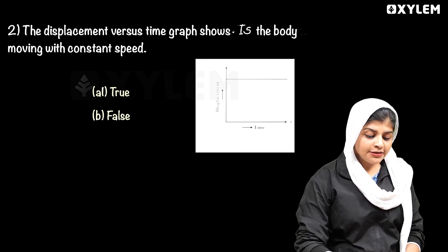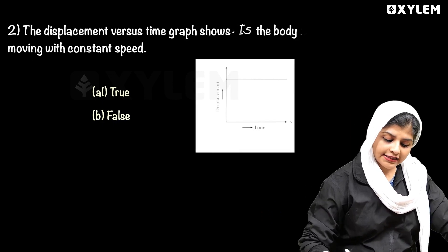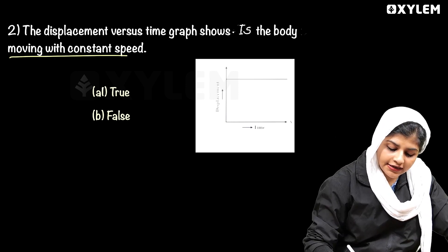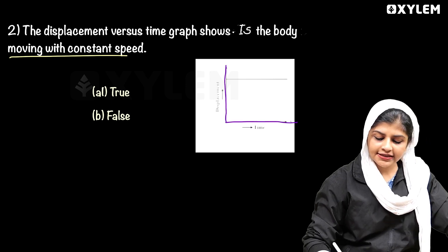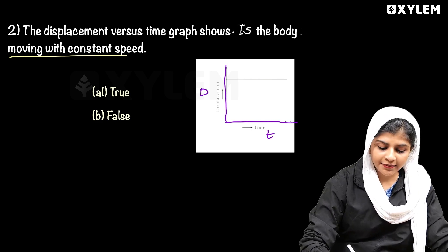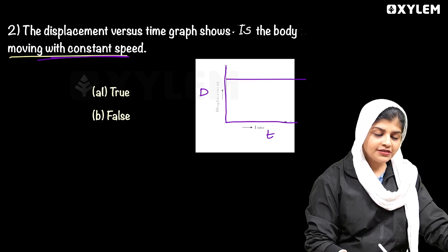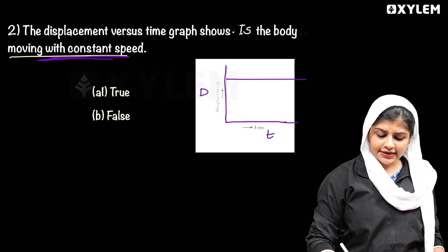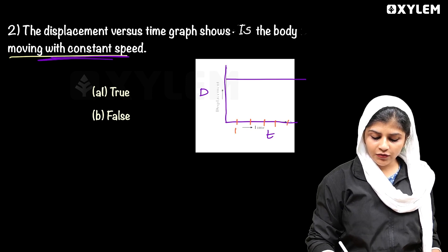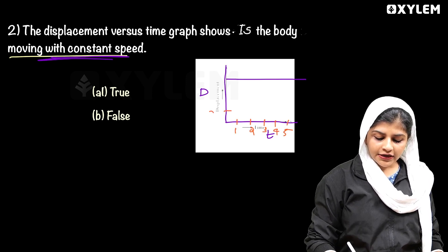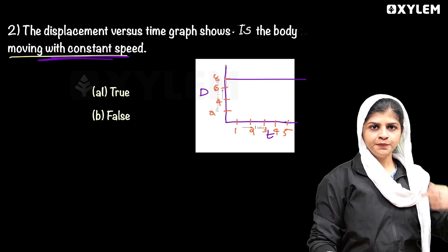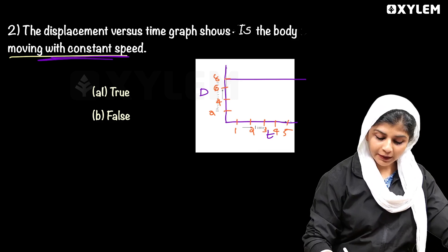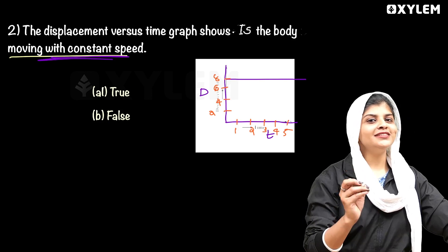The next question: the displacement vs time graph is shown in the figure. Is the body moving with constant speed? We have to think about this graph, looking at the x-axis for time and the y-axis for displacement. There is a constant speed — it is a constant speed. You will know the displacement, and you may know the velocity from the angle of the graph.